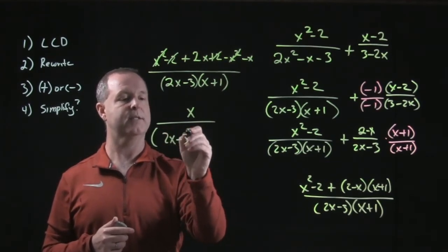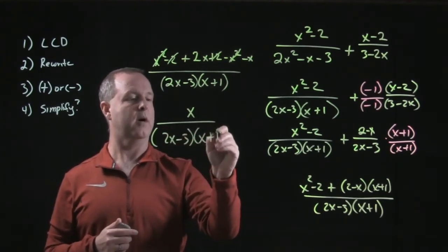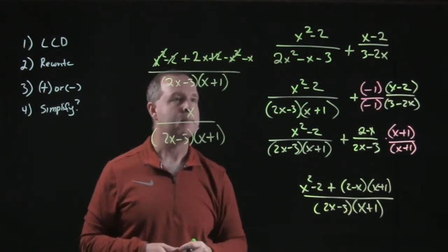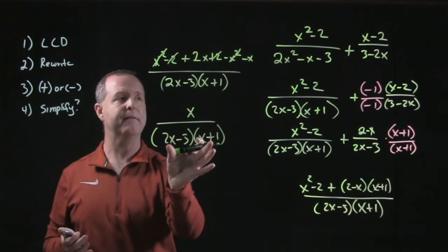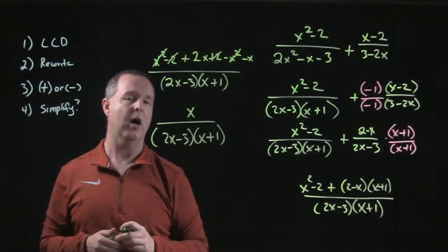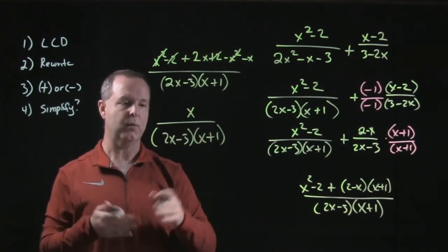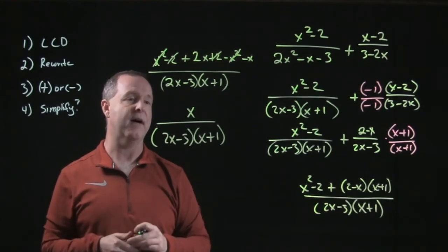So there's my solution, with the caveat that we have some values that will make the denominator crash or go to zero. We need to remember to exclude those in our final tally.